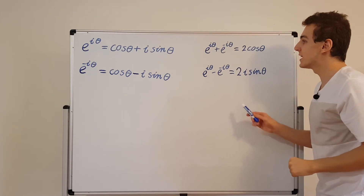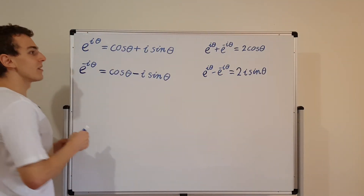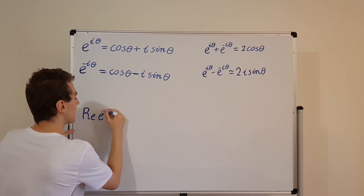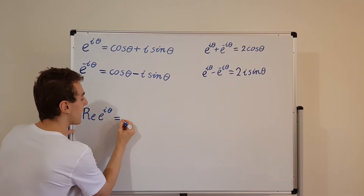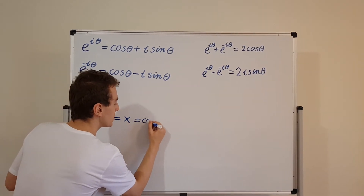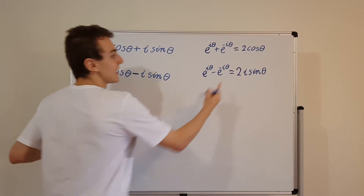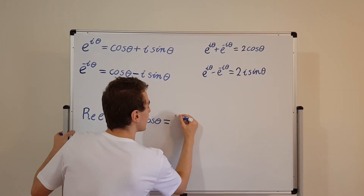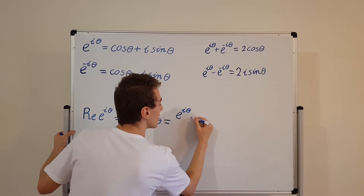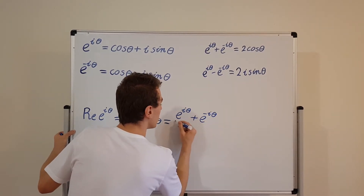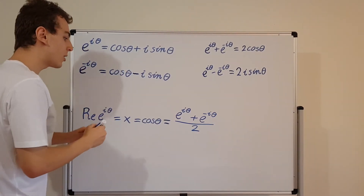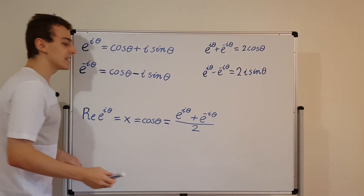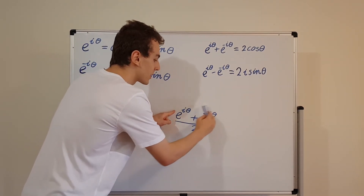Let's write this in a more convenient form. The real component of the complex exponential e to the i theta, sometimes written as x, is equal to cosine of theta. And cosine of theta equals e to the i theta plus e to the minus i theta, all divided by 2. So cosine of theta, which is the real component of e to the i theta, equals e to the i theta plus its complex conjugate, all divided by 2.